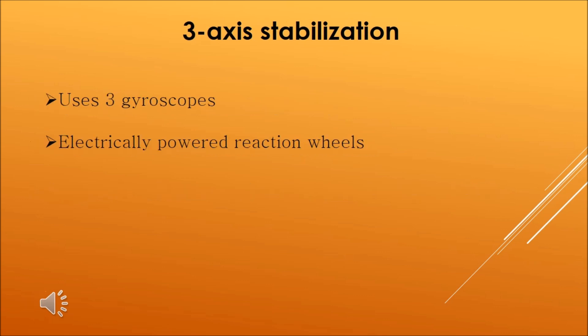Now let us come to the second method of stabilization, that is three-axis stabilization. Three-axis stabilization involves the use of three gyroscopes, one for each axis — X, Y, and Z — to keep satellites correctly oriented in space. This is achieved using reaction wheels.